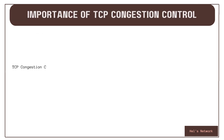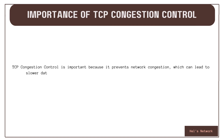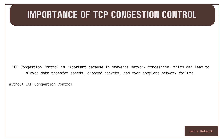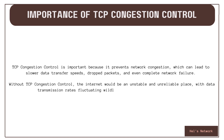TCP congestion control is important because it prevents network congestion, which can lead to slower data transfer speeds, dropped packets, and even complete network failure. Without TCP congestion control, the internet would be an unstable and unreliable place, with data transmission rates fluctuating wildly and networks crashing regularly.